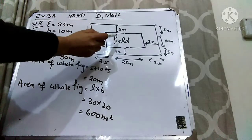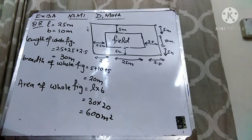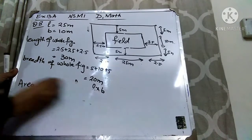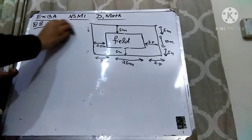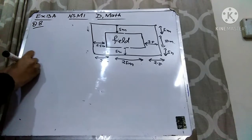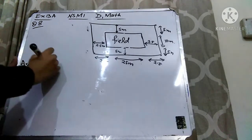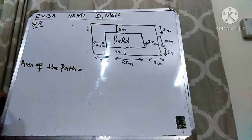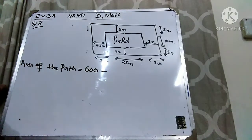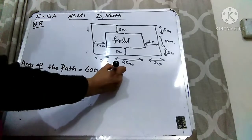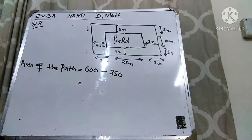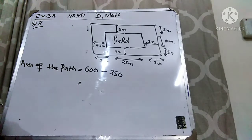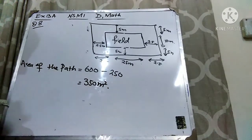Now we can find out the area of this path by subtracting the area of the field from the total area. So the total area was 600, and the area of the field was 250. When I subtract 250 from 600, I get 350 meters square. So the area of the path is 350 meter square.